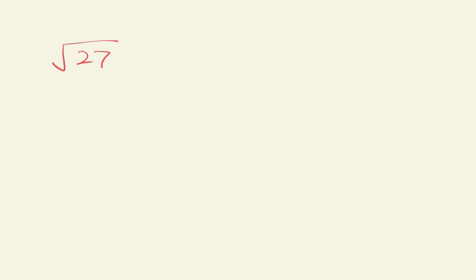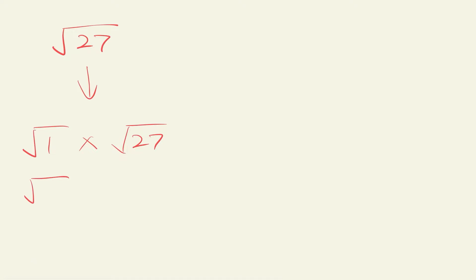Now that we've got that out of the way, let's get right into examples. How do I simplify surds? Say I have square root of 27. We can write this as square root 1 times square root 27, or square root 3 times square root 9.